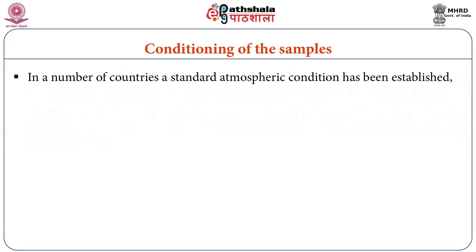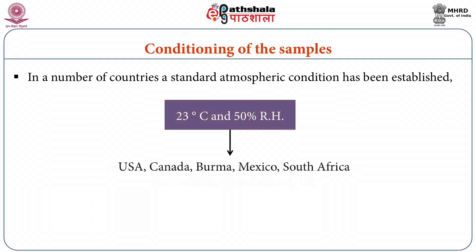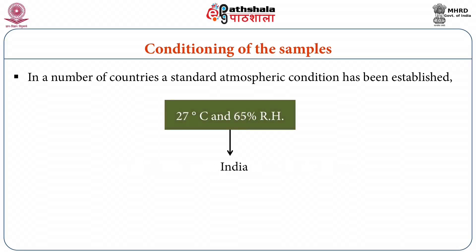In a number of countries, a standard atmospheric condition has been established: 20 degrees centigrade and 65 percent RH in Argentina, Australia, Belgium, France, Germany, Netherlands, New Zealand, and United Kingdom. Whereas 23 degrees centigrade and 50 percent RH in USA, Canada, Burma, Mexico, and South Africa. In India, the prevailing standards are 27 degrees centigrade and 65 percent RH.